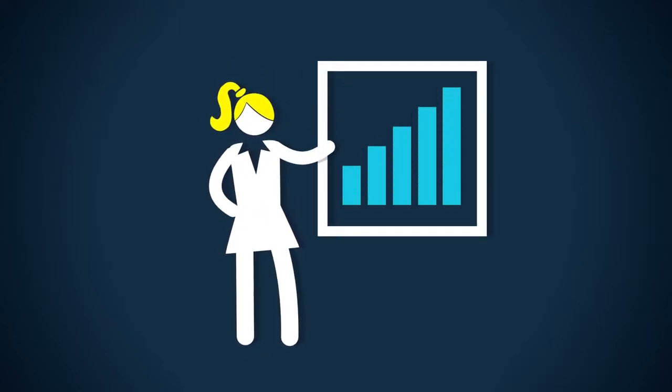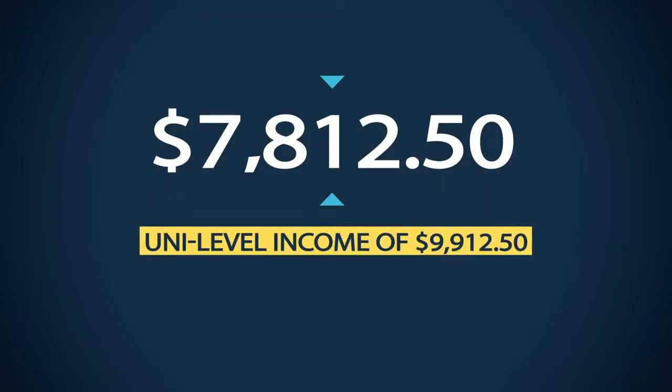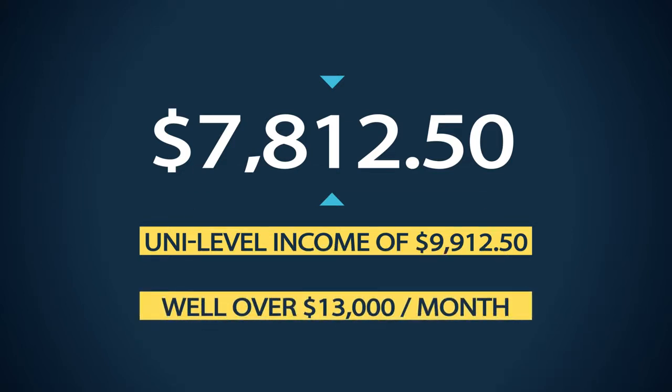Level 5, Marie's income is $7,812.50 for a monthly total uni-level income of $9,912.50. And when we add the other bonuses, we're over $13,000 per month.